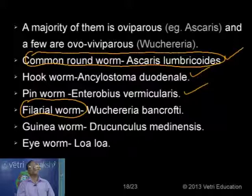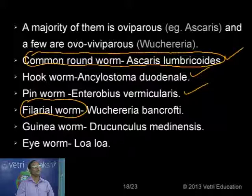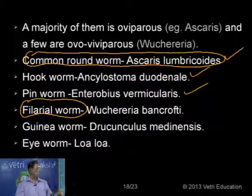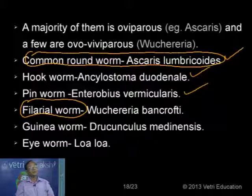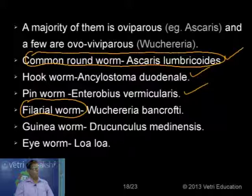The next one is the guinea worm, the highly dangerous one — Dracunculus medinensis. It is normally found embedded in the connective tissues, muscles, or even in the synovial cavity, causing much damage. The synovial cavity is the cavity formed in a synovial joint between two bones where synovial fluid is present. The guinea worm cannot be cured by medication; it can only be removed by surgery.